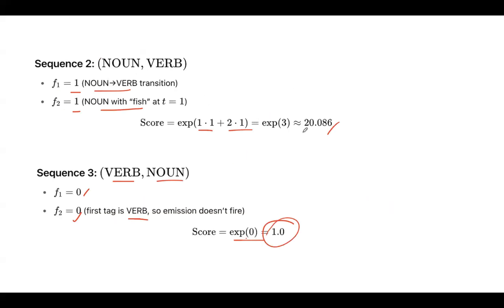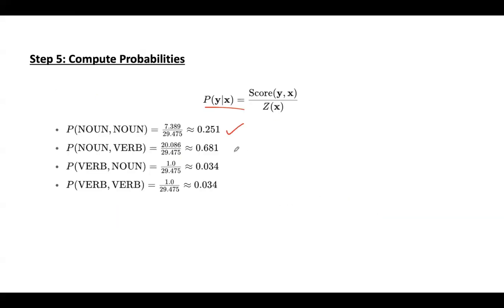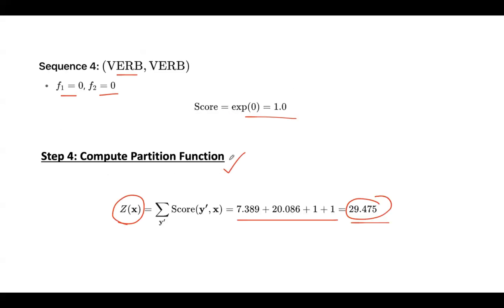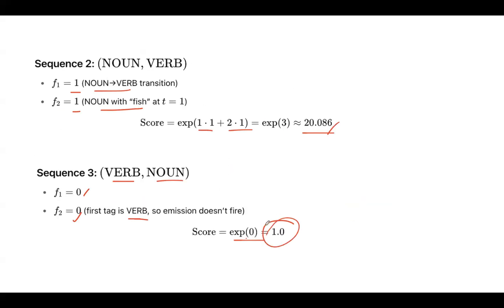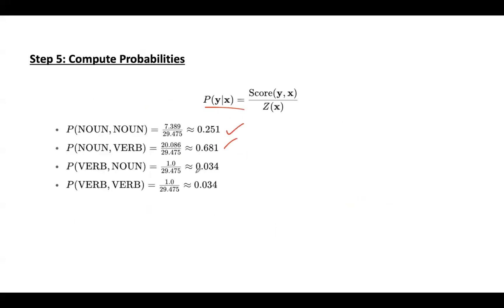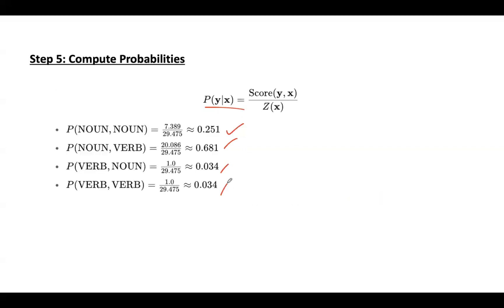You will get this. In the same way for verb noun, value is 1.0 divided by 29.475. For the fourth one also, value is 1.0 divided by 29.475. These are the probability scores.